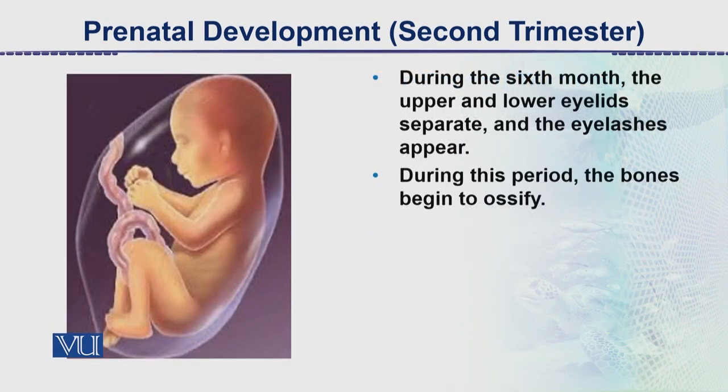During the 6th month, the upper and lower eyelids separate and eyelashes start appearing. During this period, the bones also begin to ossify.